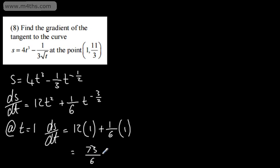So all we've done is differentiated the function — s is here the function of t — and substituted in the t-coordinate. The s-coordinate is irrelevant in the actual computation of the gradient.